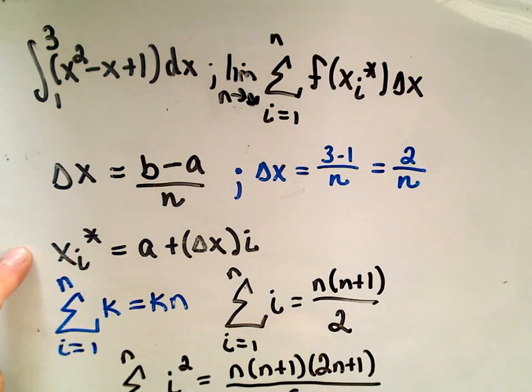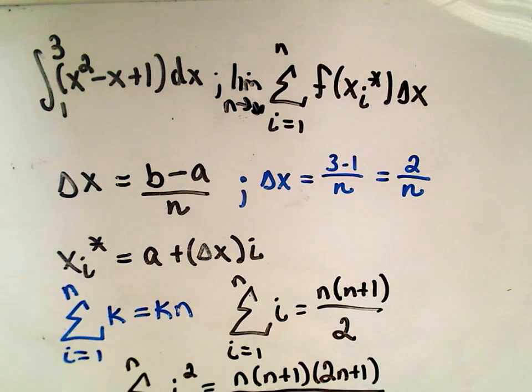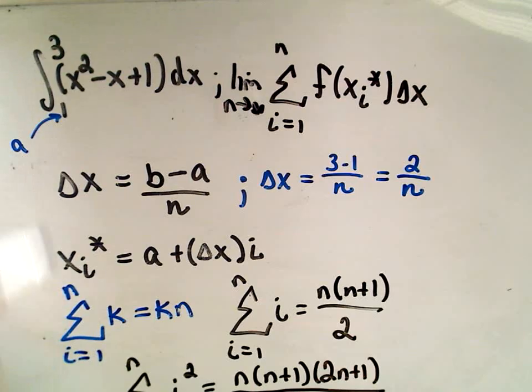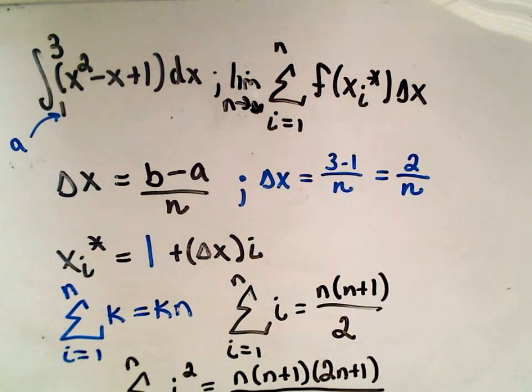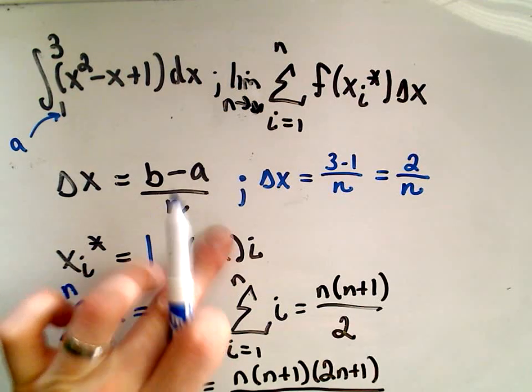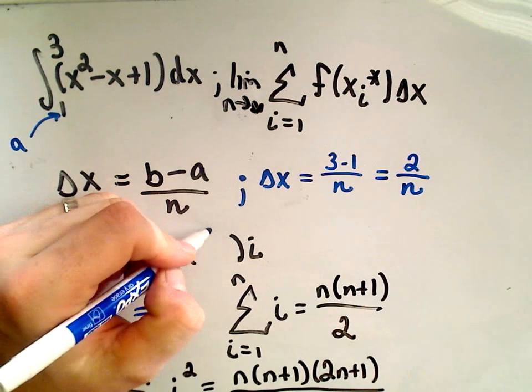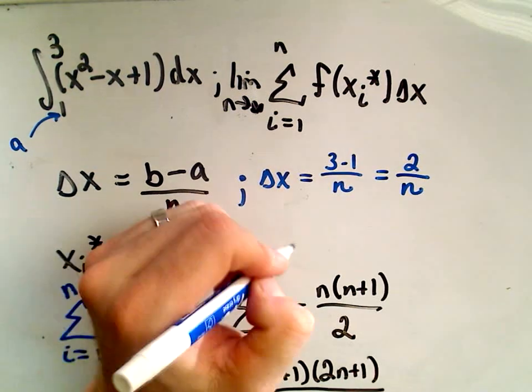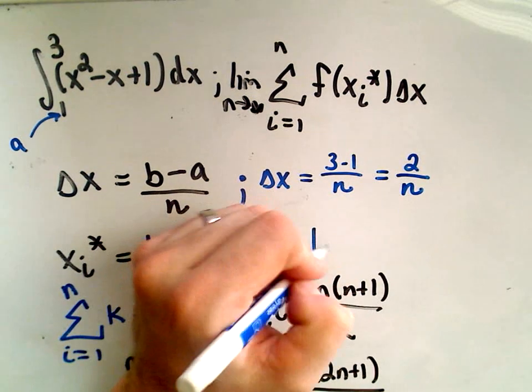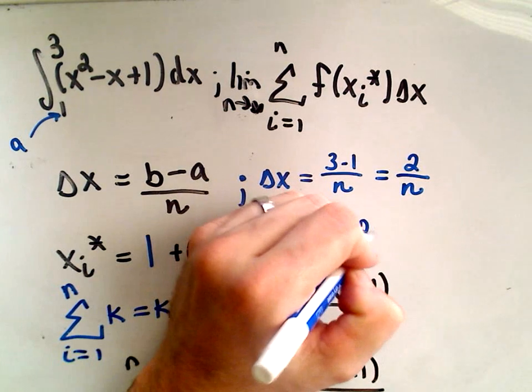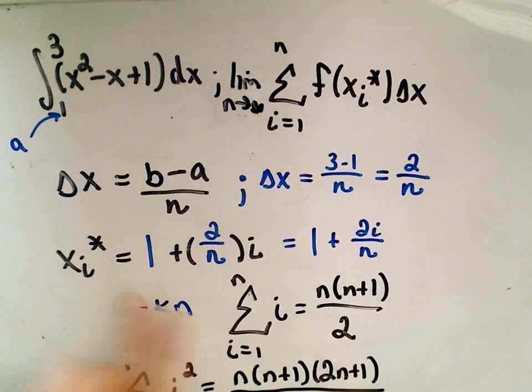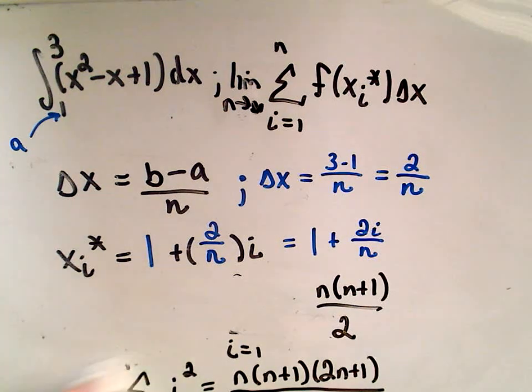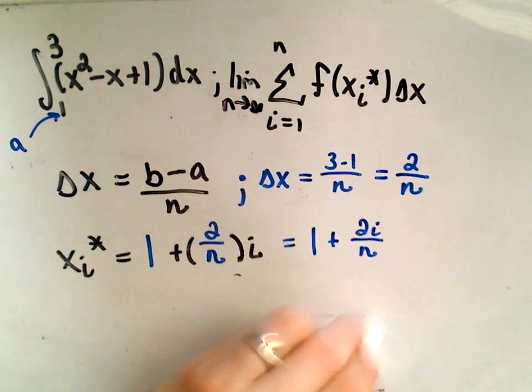Now to get our value for x sub i, we just plug in our a value. The lower limit of integration is our a value. So we're going to let x sub i be a, which is 1. We know what delta x is, we just calculated that. That's the value 2 over n, or equivalently, I'm going to write it as 1 plus 2i over n. So now we know our x sub i value, and there's nothing really to fill in on these bottom formulas, but we'll end up using them at some point during the course of this problem.